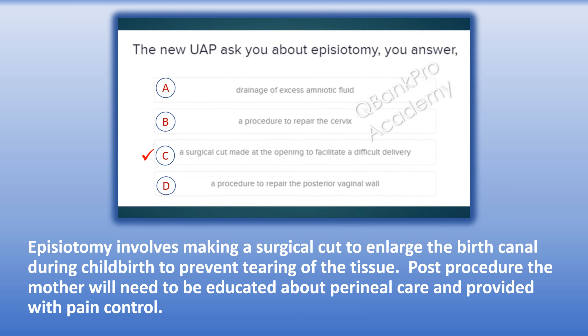The correct answer is C. A surgical cut made at the opening to facilitate a difficult delivery. Explanation: Episiotomy involves making a surgical cut to enlarge the birth canal during childbirth to prevent tearing of the tissue. Post-procedure, the mother will need to be educated about perineal care and provided with pain control.